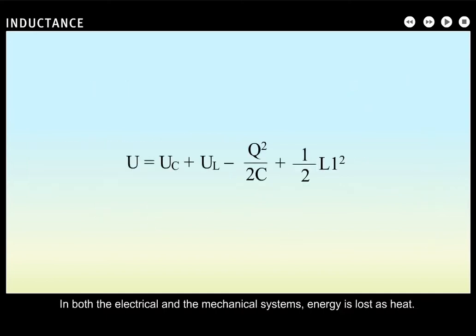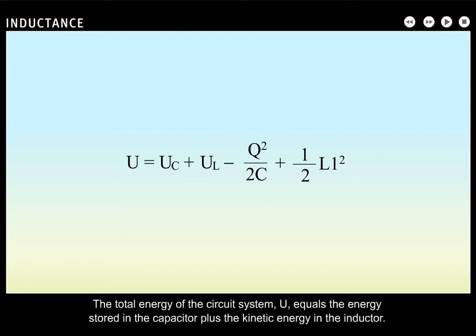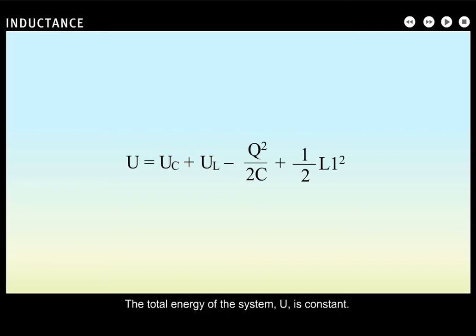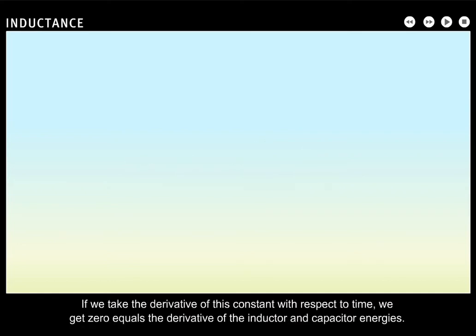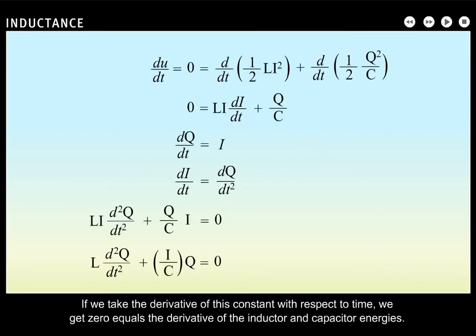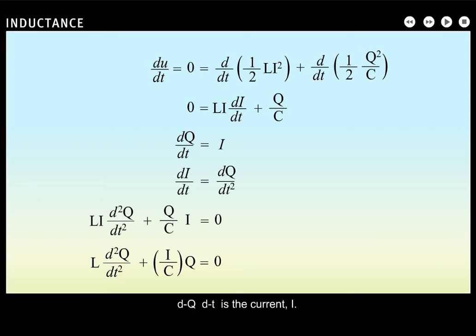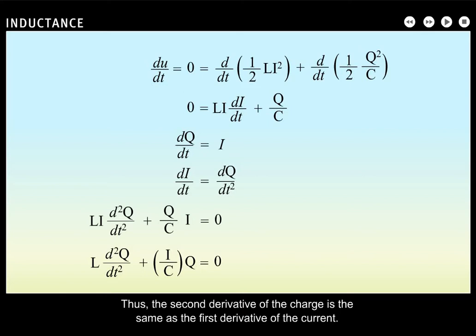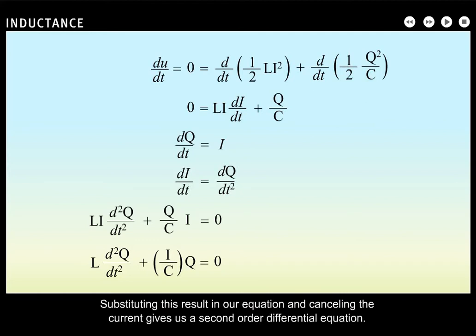In both the electrical and the mechanical systems, energy is lost as heat. The total energy of the circuit system U equals the energy stored in the capacitor plus the kinetic energy in the inductor, and is constant. Taking the derivative of this constant with respect to time gives zero equals the derivative of the inductor and capacitor energies. Since dQ/dt is the current I, the second derivative of charge is the same as the first derivative of current. Substituting this result and canceling the current gives us a second-order differential equation.